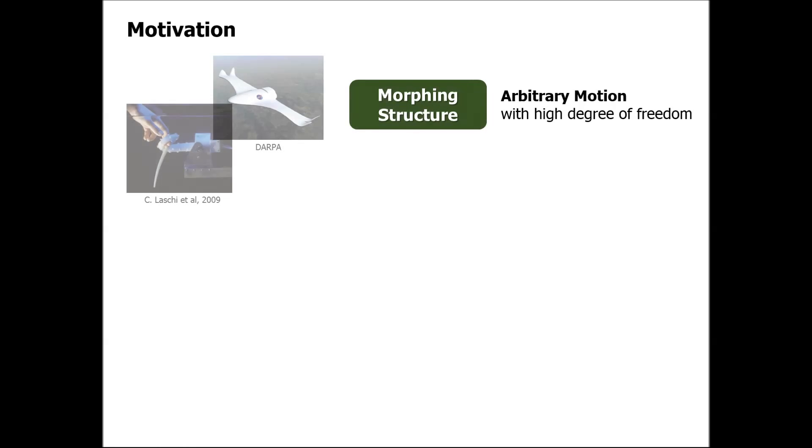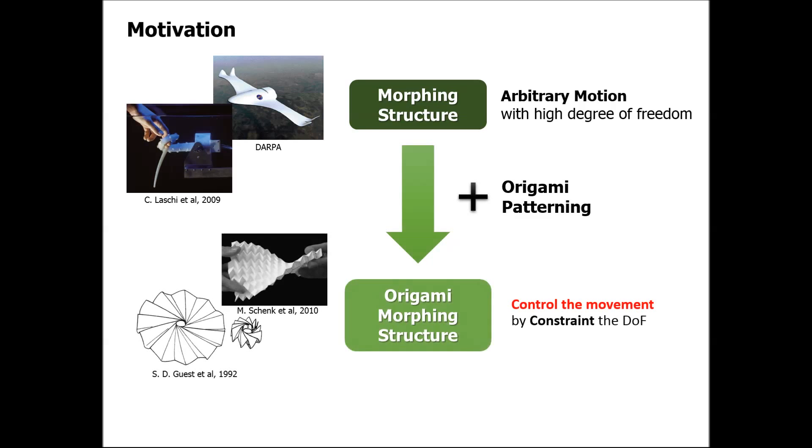Generally speaking, a morphing structure has a high degree of freedom. However, if we apply the origami pattern to the morphing structure, we can constrain the degrees of freedom so we can control the movement of the structure. Therefore, the origami structure can be a structural solution to the control problem in morphing structures.